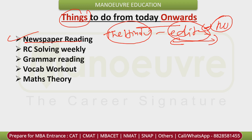Currently you may understand only 50 to 40% of it, but gradually start. Also practice one RC daily from the Manual book.